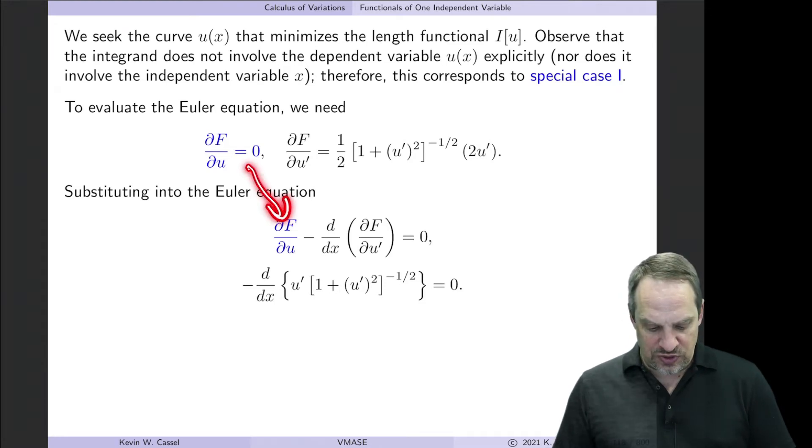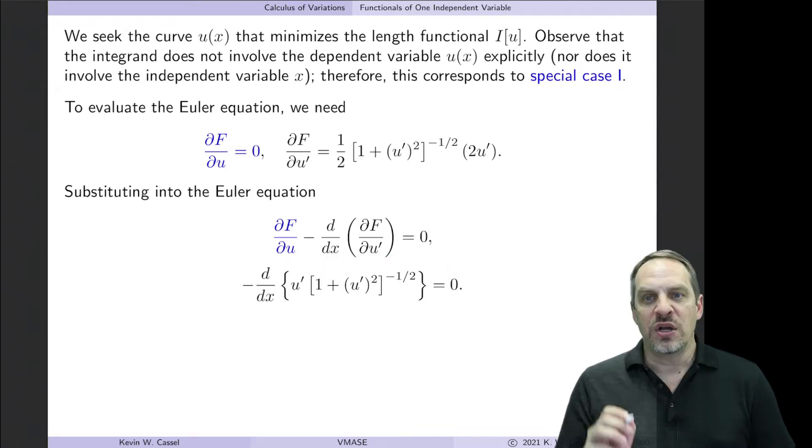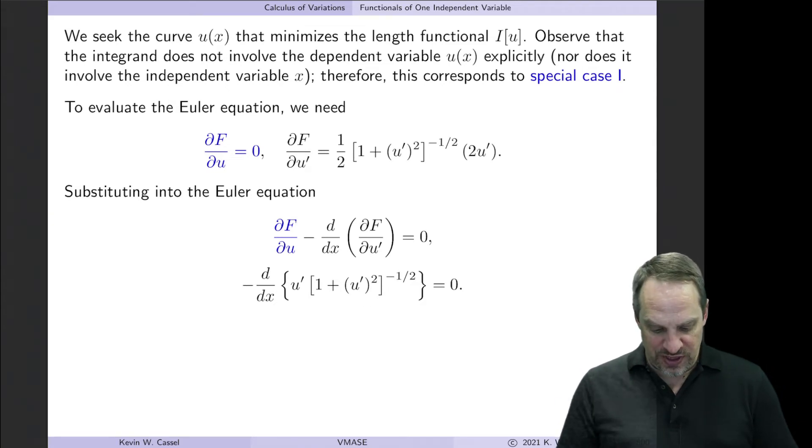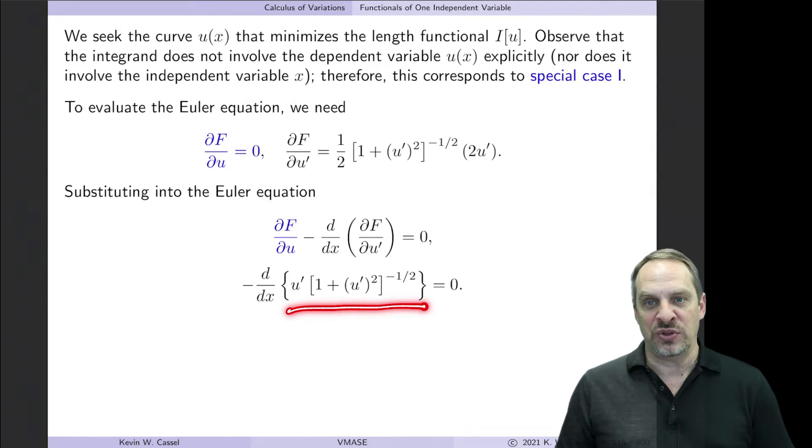So then I substitute in. ∂F/∂u is zero, so this term vanishes, and then ∂F/∂u' is this mess right here. Notice what we have: minus d/dx of ∂F/∂u'. What we would normally do at this stage is take d/dx of the ∂F/∂u' to get the second order ordinary differential equation, our Euler equation. However, in this case, because this term vanishes, I have d/dx of something is equal to zero. So that means that something has to be equal to a constant, because if I differentiate a constant, of course, we just get zero.